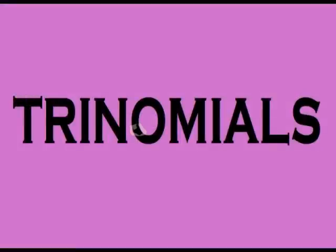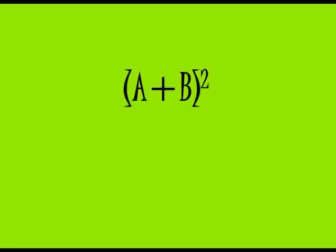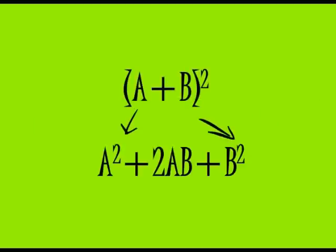To factor a perfect square polynomial, the first and last terms are squares of integers. The middle term is kind of tricky - it's twice the product of those two terms.